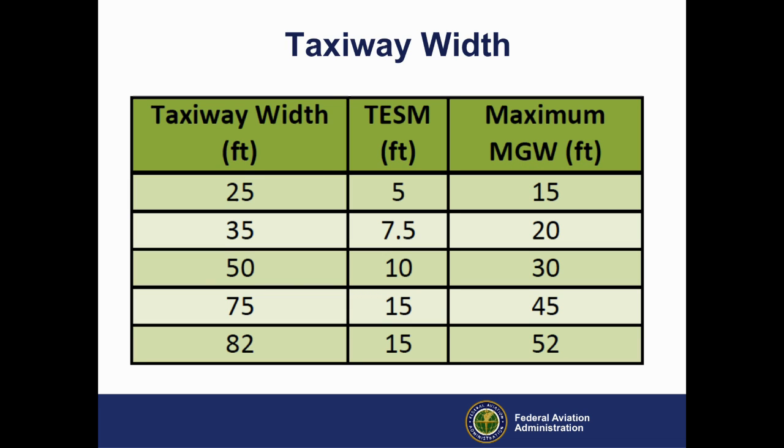As covered in our previous videos and Advisory Circular 150/5300-13 Airport Design, the first step in designing a taxiway system is to determine the proper straight section taxiway width. These materials also provide the standard taxiway edge safety margins, or TESMs, and maximum main gear widths, or MGWs, associated with each taxiway design group, or TDG.